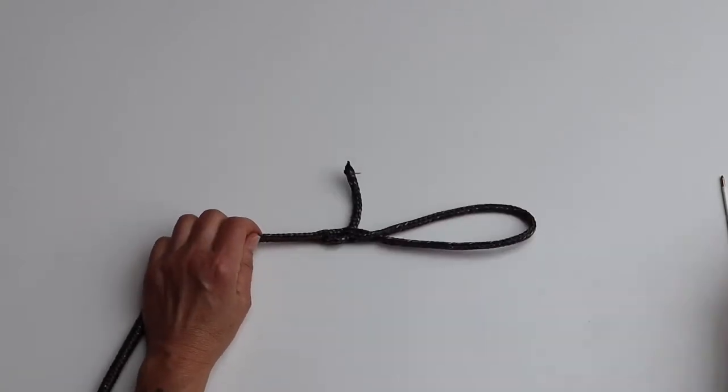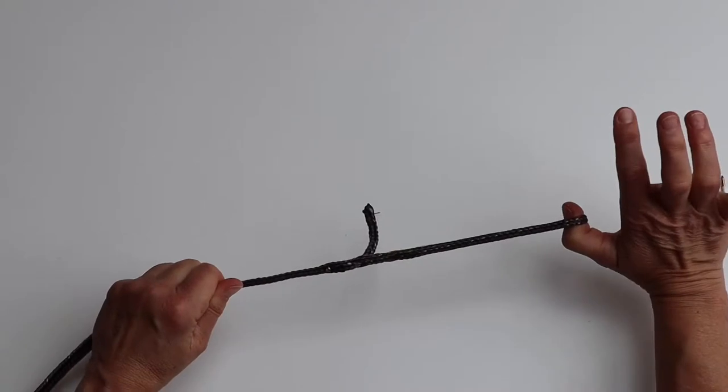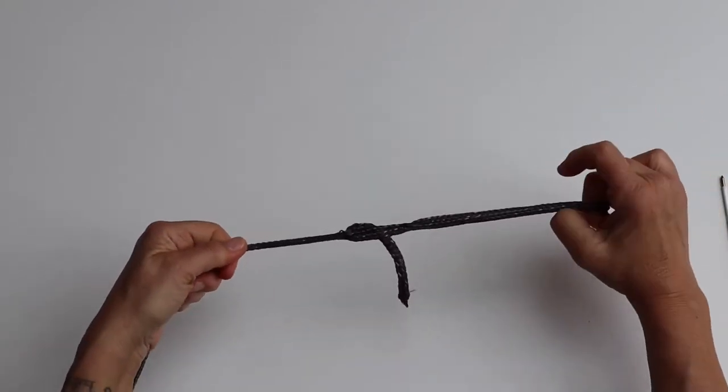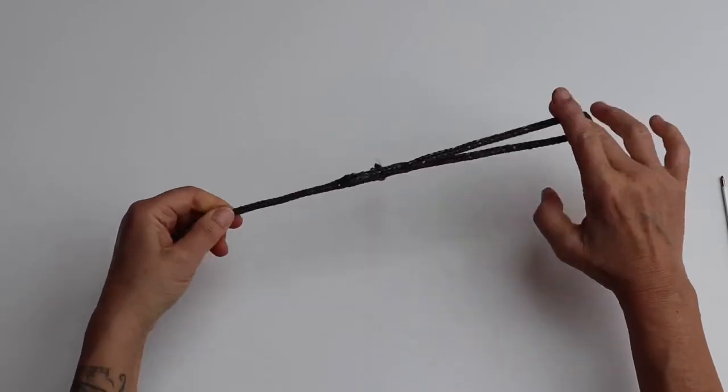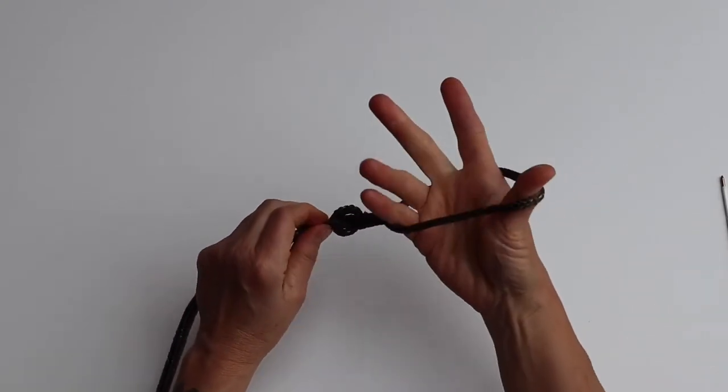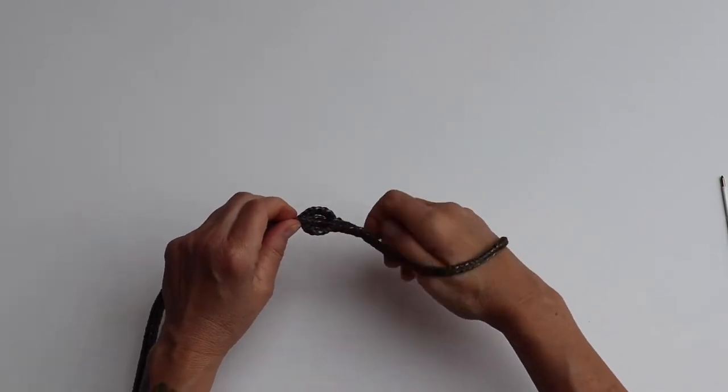Make sure you are not damaging the fabric of the rope that would weaken it. Then you can test it, pull as hard as you can on both ends and you will see this knot is not going anywhere.